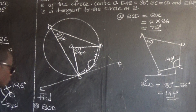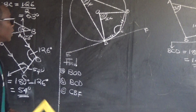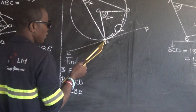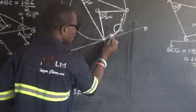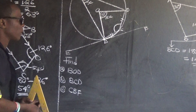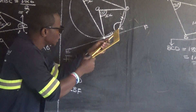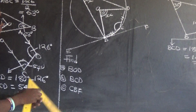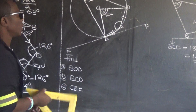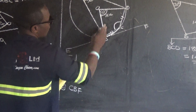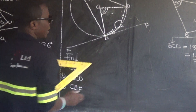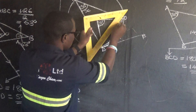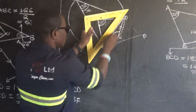Now let us look at the last question: angle CBF. They want this angle CBF. For us to find CBF, what can help us is we need to come up with an imaginary line — just draw a line from the center O to point B, and also a line from O to D.